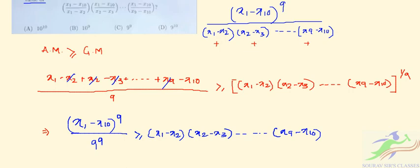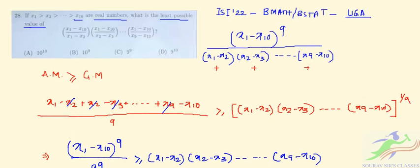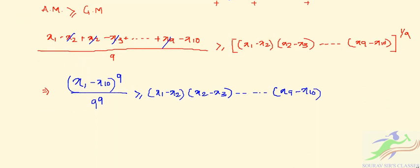Right. So we have the possible value, the least possible value of this particular expression. So if we put this over here, so we have the expression, simplify this expression.